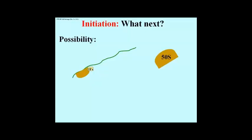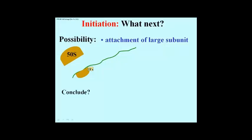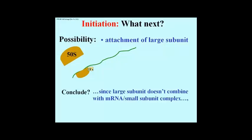We're still in initiation. One possibility is that the 50S subunit simply attaches to this complex, but as you see, that doesn't happen. One of the initiation factors seems to be responsible for preventing 50S association with this structure. We're concluding here that the large subunit does not yet combine with the mRNA — it doesn't bind with the mRNA small subunit complex.